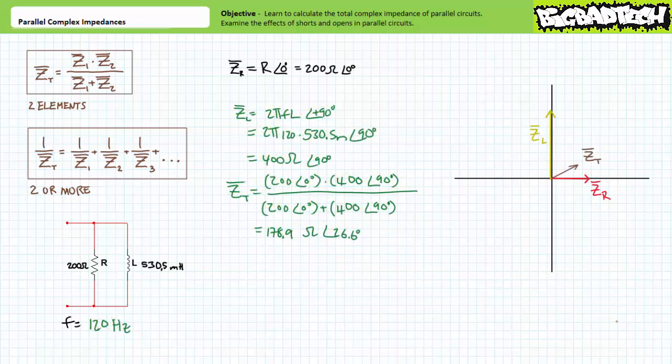Consider if we raised excitation frequency to 120 hertz — twice the initial value. As previously, the resistor is essentially immune to frequency effects and as such remains an impedance of 200 ohms at an angle of zero. The inductor being a reactive element however must take into account this increase in frequency. Substituting our given values into the equation, we arrive at an inductive impedance of 400 ohms at an angle of positive 90 degrees. Illustrated on the impedance diagram, the inductor is still pointed entirely in the imaginary vertical positive y direction, only its magnitude is twice our initial calculation. Using the quick and dirty calculation method for this new condition at an increased frequency of 120 hertz, we arrive at a total impedance value of 178.9 ohms at an angle of positive 26.6 degrees.